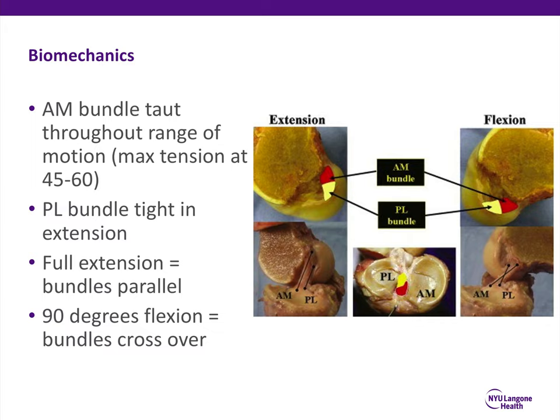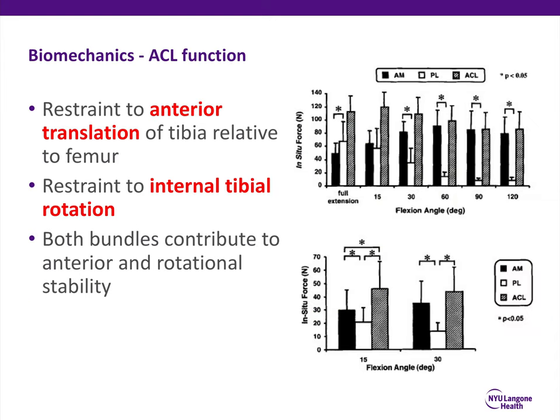Please notice the origination and insertion of the ligament on the femur and the tibia in terms of the anteromedial bundle as well as the posterolateral bundle. The ACL acts as a very important restraint to anterior translation of the tibia relative to the femur. It's also a very important restraint to internal tibial rotation. Both the anteromedial and posterolateral bundles contribute to anterior and rotational stability.